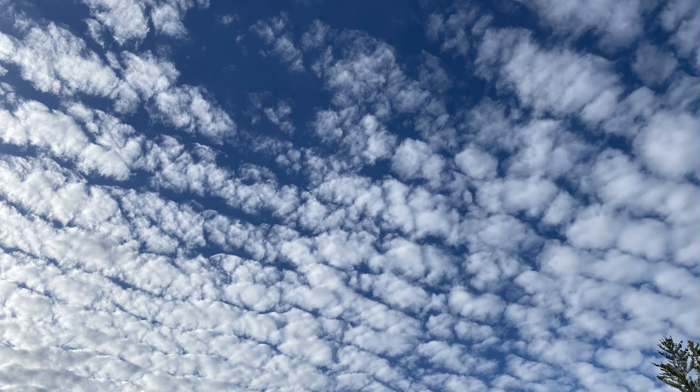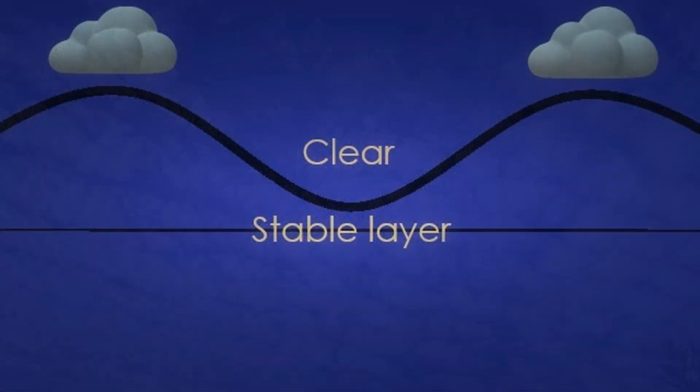Think of the upward and downward motion of the air as a wave on the ocean. In this case, the stable layer of air acts as the base of the wave, because a stable layer inhibits upward motion in the atmosphere. It creates a real boundary, somewhat like the boundary between ocean water and the air above it. Where you see a row of clouds is the top of the waves, and where there is a row of clear sky between is the trough of the wave.